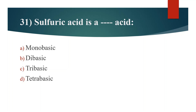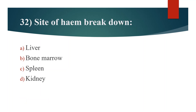Thirty-first question. Sulfuric acid is a blank acid. Option A: Monobasic. Option B: Dibasic. Option C: Tribasic. Option D: Tetrabasic. Answer is Option B: Dibasic.